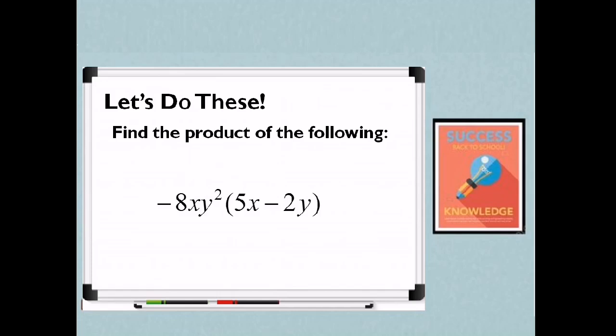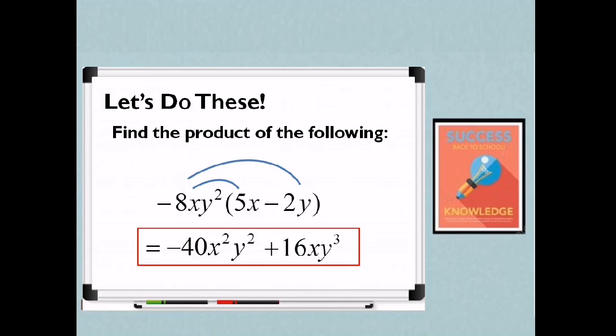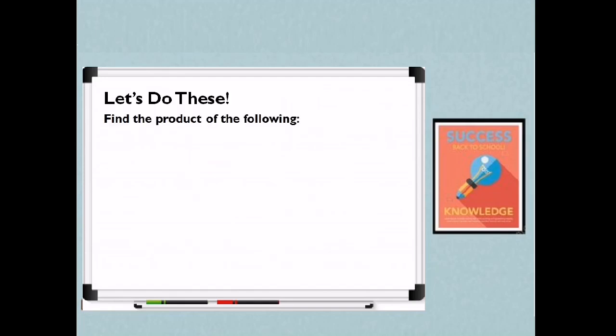How about negative 8XY squared times the quantity 5X minus 2Y? So let's start multiplying negative 8XY squared by 5X. So constant, negative 8 times 5 is negative 40. Then X times X is X squared. Then Y squared. Therefore, negative 40X squared Y squared. Next, negative 8XY squared times negative 2Y. So negative 8 times negative 2 is positive 16. Then X, Y squared times Y. We just add the exponent that is Y cubed. Therefore, plus 16XY cubed. The product is negative 40X squared Y squared plus 16XY cubed. The first three examples are using distributive property.